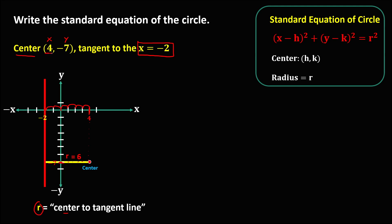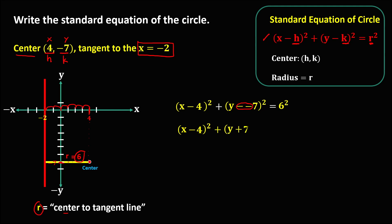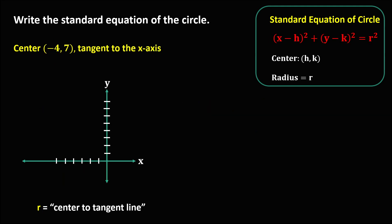From the standard equation, we have (x minus h)² + (y minus k)² = r². Substituting: h is positive 4, k is negative 7, and r is 6. So we get (x − 4)² + (y − (−7))² = 6². The double negative becomes positive, giving us (x − 4)² + (y + 7)² = 36. This is the standard equation for the circle.